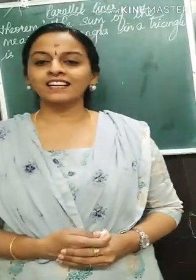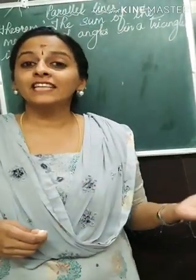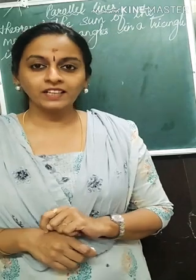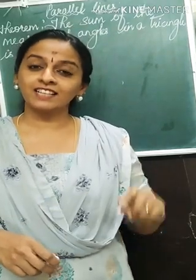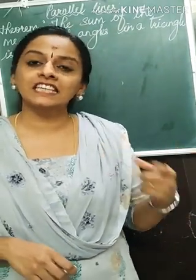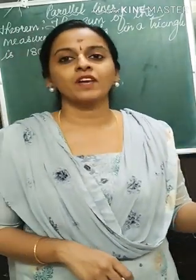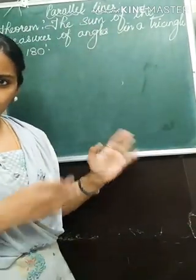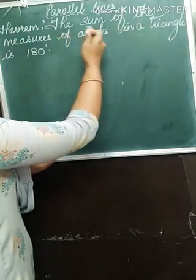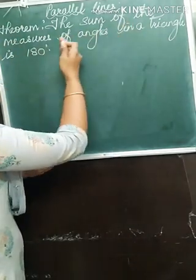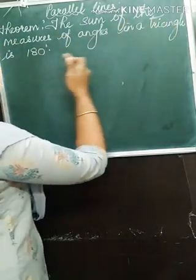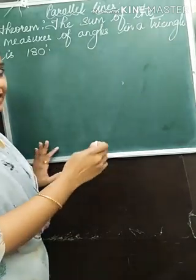Hello my dear students. Welcome back. We had completed practice 2.1. Now we will start with a theorem today. The statement of the theorem goes like this: the sum of the measures of angles in a triangle is 180 degrees.